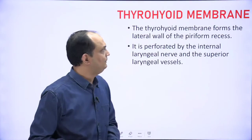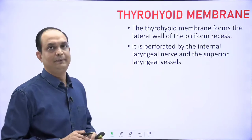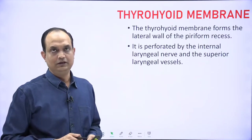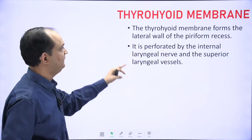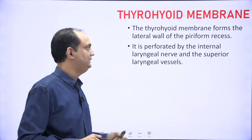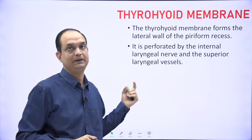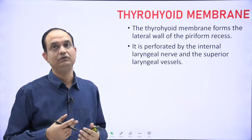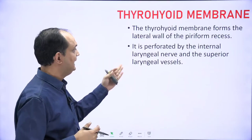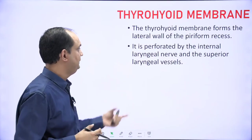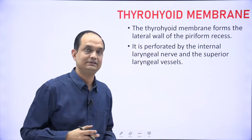The thyrohyoid membrane forms the lateral wall of the piriform fossa or recess. It is perforated by the internal laryngeal nerve, which is a branch of the superior laryngeal nerve that comes from the vagus, and by the superior laryngeal vessels.